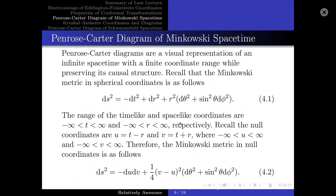Before we attempt to draw Penrose-Carter diagrams for Schwarzschild geometries, let us first draw them for Minkowski spacetime. Penrose-Carter diagrams are a visual representation of an infinite spacetime with a finite coordinate range while preserving its causal structure. Recall that the Minkowski metric in spherical coordinates has time-like and space-like coordinates t and r ranging from minus infinity to infinity. Recall that the null coordinates are u equals t minus r and v equals t plus r. Therefore, u and v are also between minus infinity and infinity, and the Minkowski metric in null coordinates is as follows.